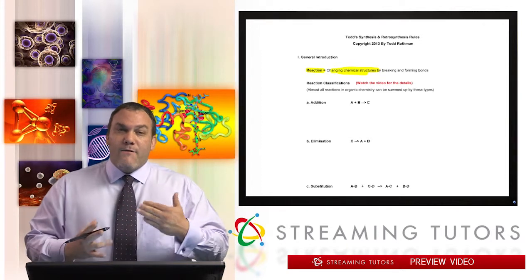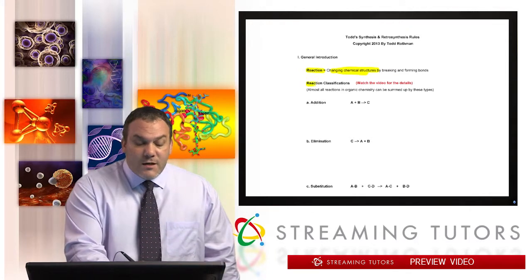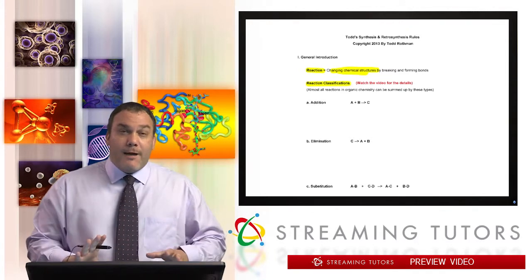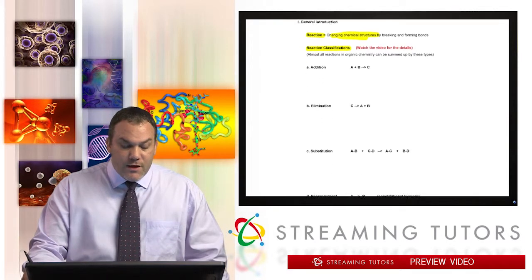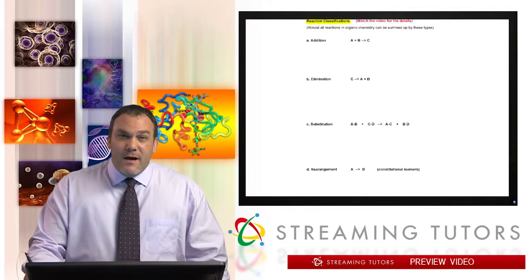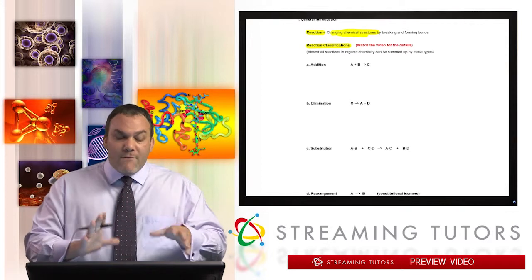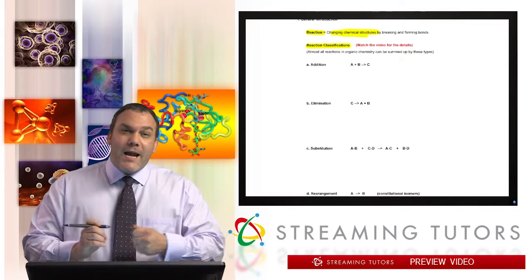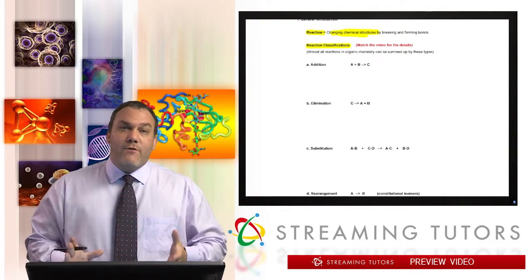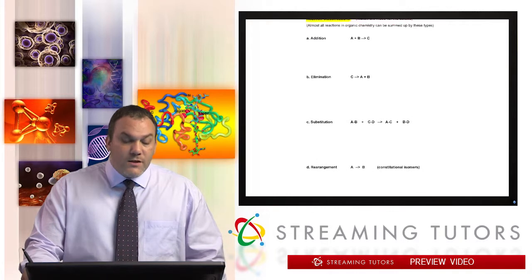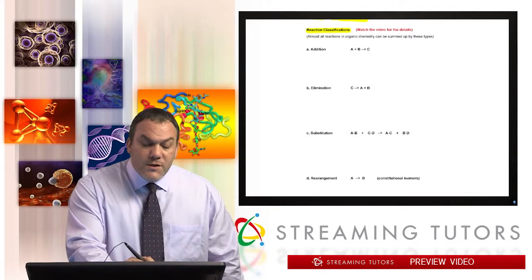Reactions can be classified into different types. This is really useful because these reactions A, B, C, and D cover almost all of organic chemistry. After I describe what these are, you could turn to any page in your textbook and it's going to be one of these four reactions.